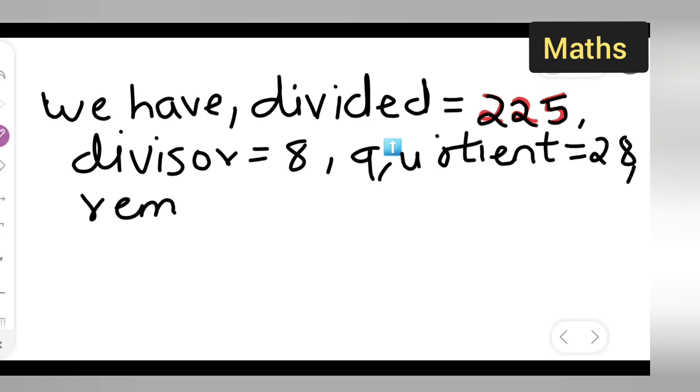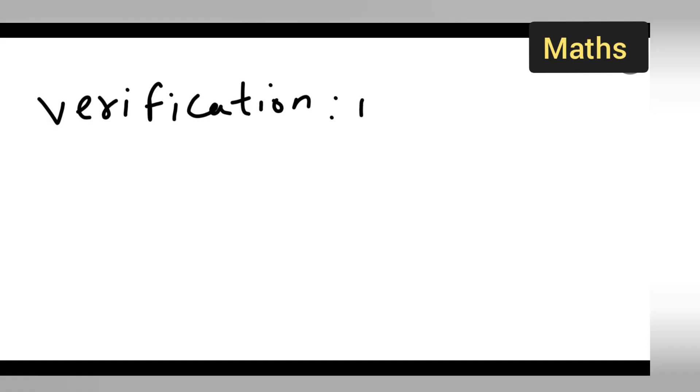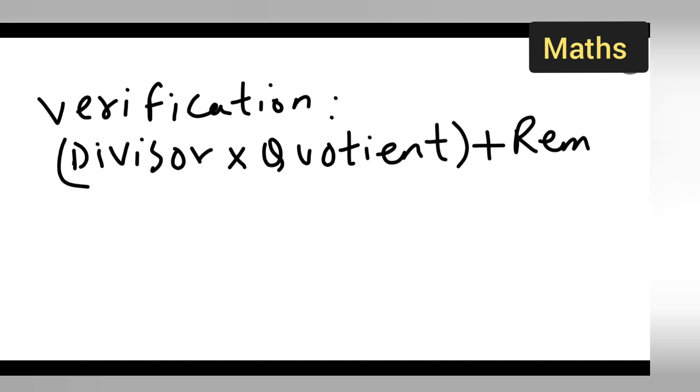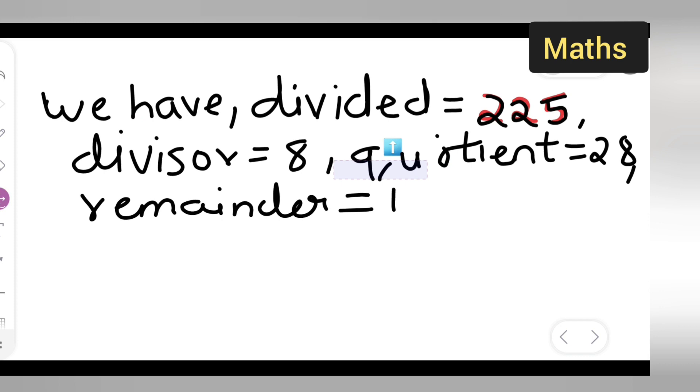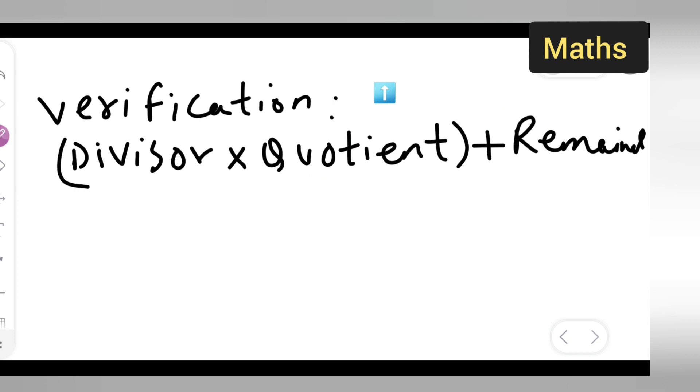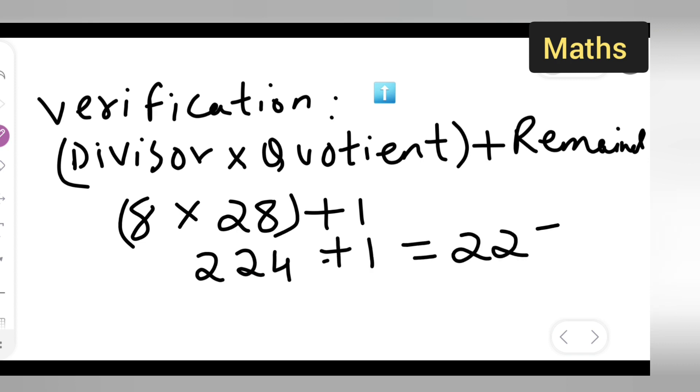Then we have the remainder, remainder is equal to 1. The verification part, for verification you'll have divisor multiplied by quotient plus remainder. So divisor is 8, write down 8 multiplied by quotient is 28 plus remainder was 1. If you multiply this you are going to get 224 plus 1 will give you 225 which is equal to dividend.